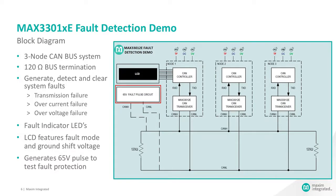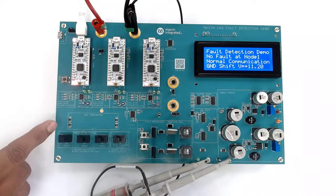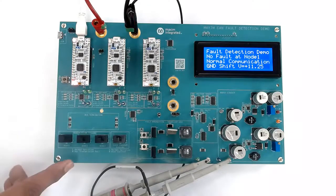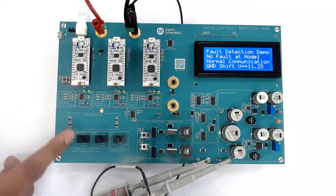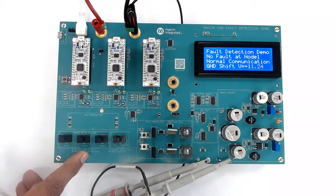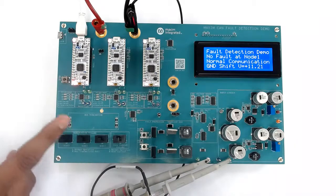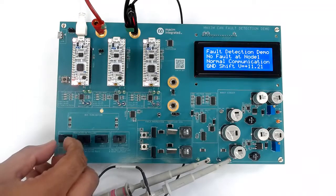Let's look at the hardware now. Here is the controller transceiver connected to the 120 ohm bus. This section corresponds to transmission failure. CAN H of all the nodes are connected to the bus via these node switches. Making these node switches toward right will disconnect the CAN H of a particular node from the bus. Node 1 is a transmitter sending data to node 2 and node 3.